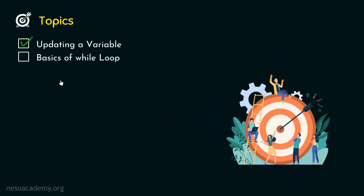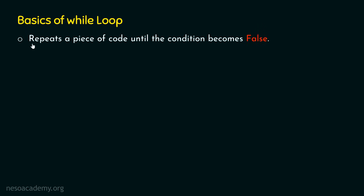Now let's move on to the next topic: basics of while loop. Let's understand what a while loop is. While loop helps us in repeating a piece of code until the condition becomes false. So if we want to repeat a piece of code — maybe a set of statements — we can do that based on some condition, until that condition becomes false, with the help of a while loop. Let's understand this concept with the help of an example.